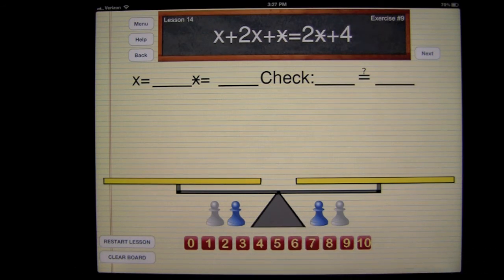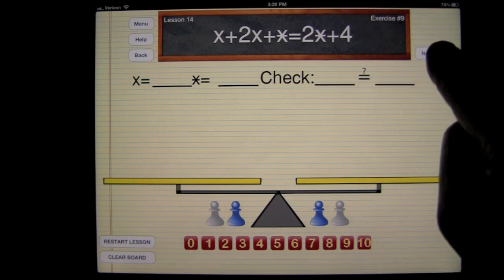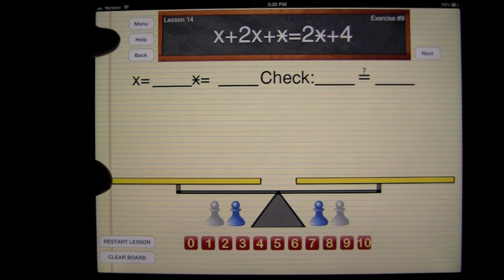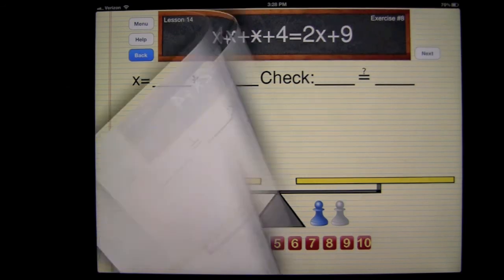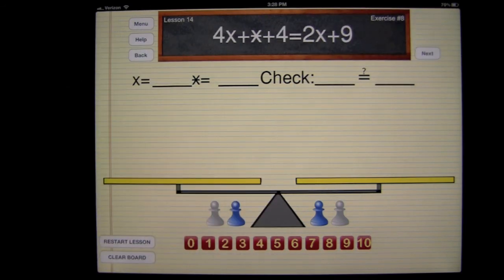And you'll do that by the same method using the balance beam with the white and blue pawns as well as the number die down here. Again, once you come up with the x as well as the star, you'll go ahead and check your problem by clearing the board. You can also restart the lesson at any time. And you can always advance to next in the upper right. Return to the menu, top left, help, review the video during the problem. And then you can always go back to the previous problem, which was before this one.